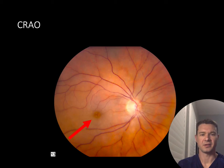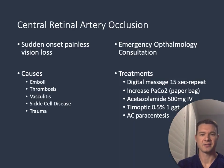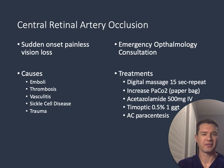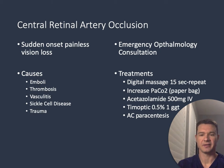Our next cause of acute vision loss is central retinal artery occlusion. In this fundoscopic image, you can see a pale retina with the classic cherry red macula, which is the hallmark of this diagnosis. Patients typically present with sudden onset painless vision loss. Causes include emboli, thrombosis, vasculitis, sickle cell disease, and trauma. This is an ophthalmologic emergency; the goal is to resolve the occlusion within 90 minutes. In addition to immediate ophthalmology consultation, ED interventions include digital ocular massage, having the patient breathe into a paper bag to increase PaCO2, administering IV acetazolamide and timoptic drops, and potentially an anterior chamber paracentesis.